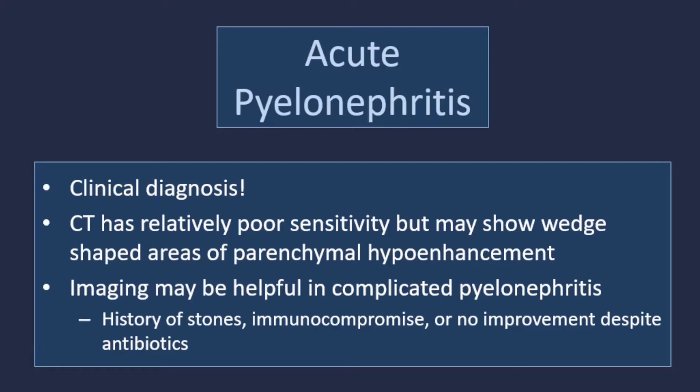Take-home points for this case: acute pyelonephritis is a clinical diagnosis because CT has relatively poor sensitivity, but may show wedge-shaped areas of parenchymal hypo-enhancement. Imaging may be helpful, however, in cases of complicated pyelonephritis — including patients with a history of stones, immunocompromised patients, or those with persistent symptoms despite antibiotics.